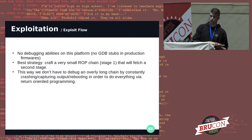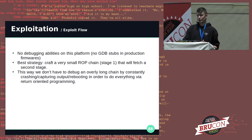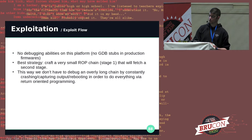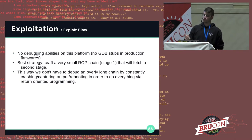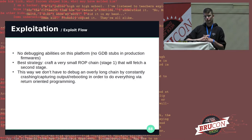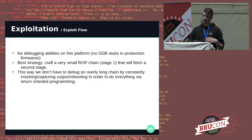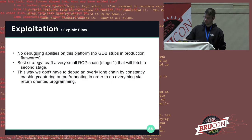Given the lack of debugging abilities on this platform — with the exception of the register dump on segfaults — the best strategy is to craft a very small ROP chain that I would call a stage one, that will fetch or receive a second stage we can compile for our target. This way, we don't have to debug overly long ROP chains by constantly crashing, capturing output, and rebooting — we can do everything with a single really simple ROP chain.